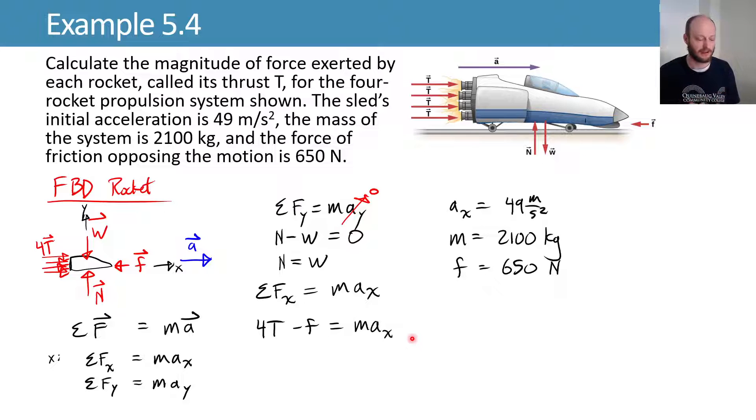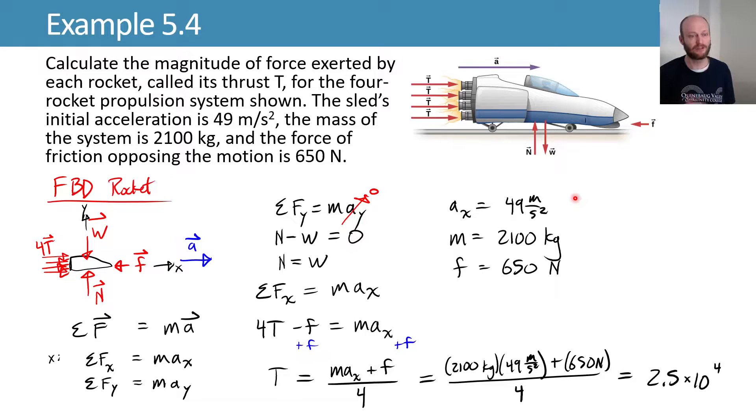We want to know what our thrust is. So we'll do a little bit of algebra and add this force of friction to both sides. And then divide the result by 4 to get my thrust equaling mass times acceleration plus the force of friction divided by 4. We can plug in the things we know from over here. And evaluate that. And we should get that the thrust from each rocket has to be 2.5 times 10 to the 4th newtons.